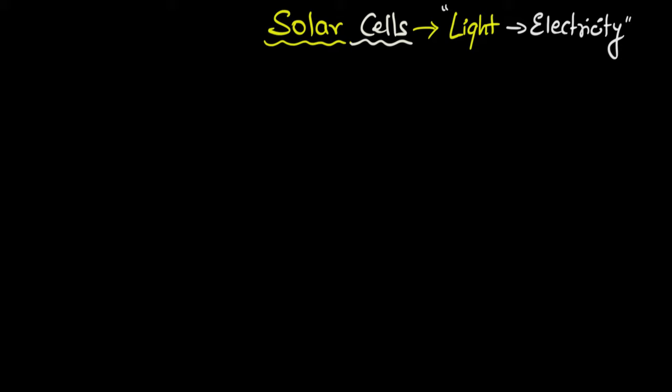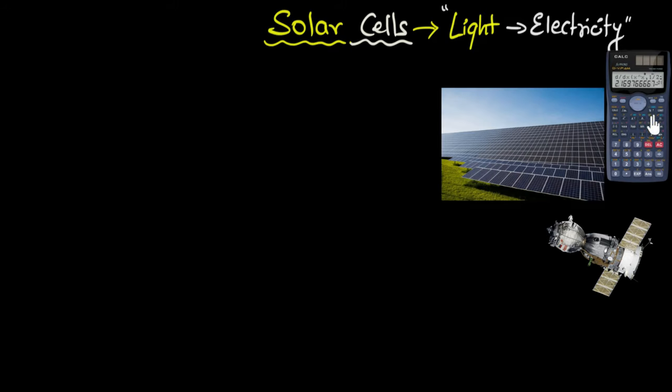And you probably know where these are used. For example, they have a lot of applications. You probably use them in calculators. These are the solar cells. You have big solar panels used to generate electricity to power up houses. And you also have solar cells in space probes. In outer space, this is one of the best ways to generate electricity. So these panels over here, these are all containing solar cells.